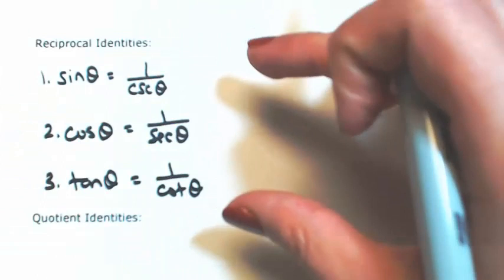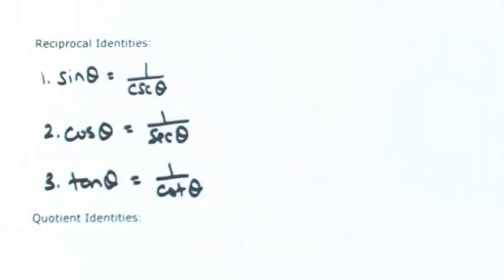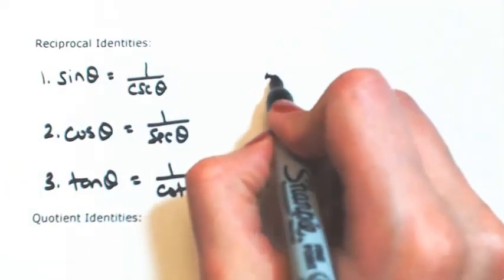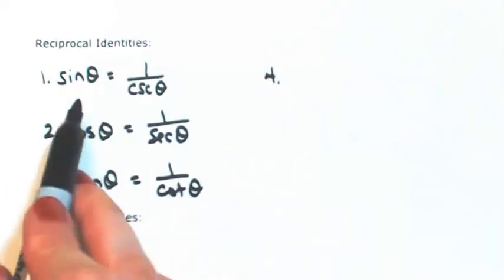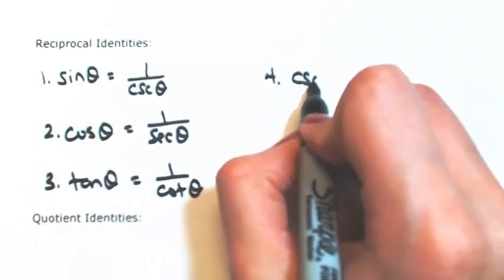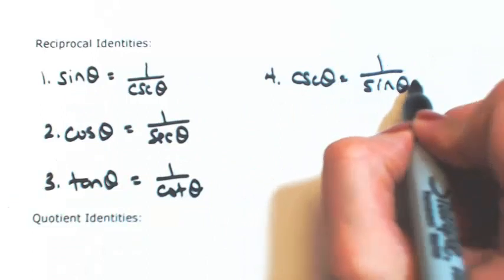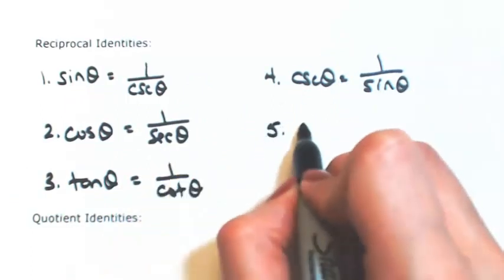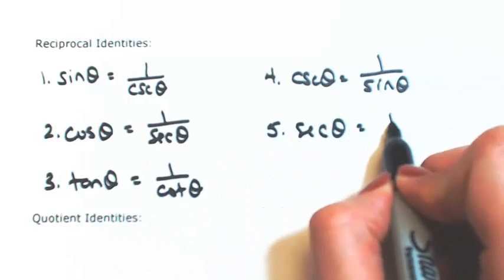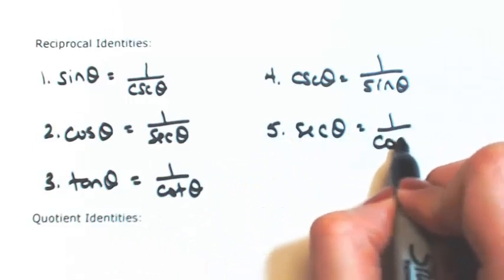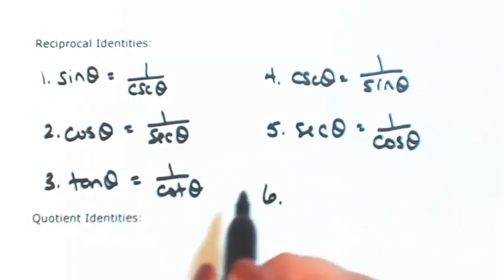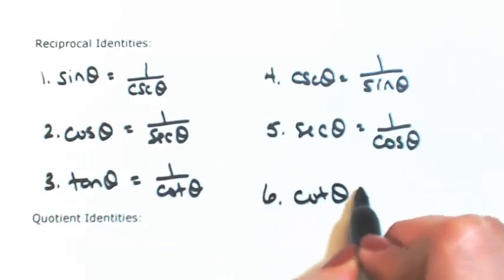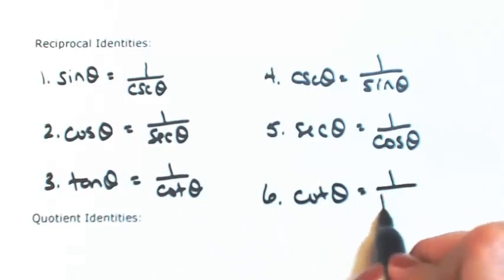The other three come from taking the reciprocals of the right side and the left side. So the fourth one is that cosecant of theta is the reciprocal of sine. Secant of theta is the reciprocal of cosine. And cotangent of theta is the reciprocal of tangent.